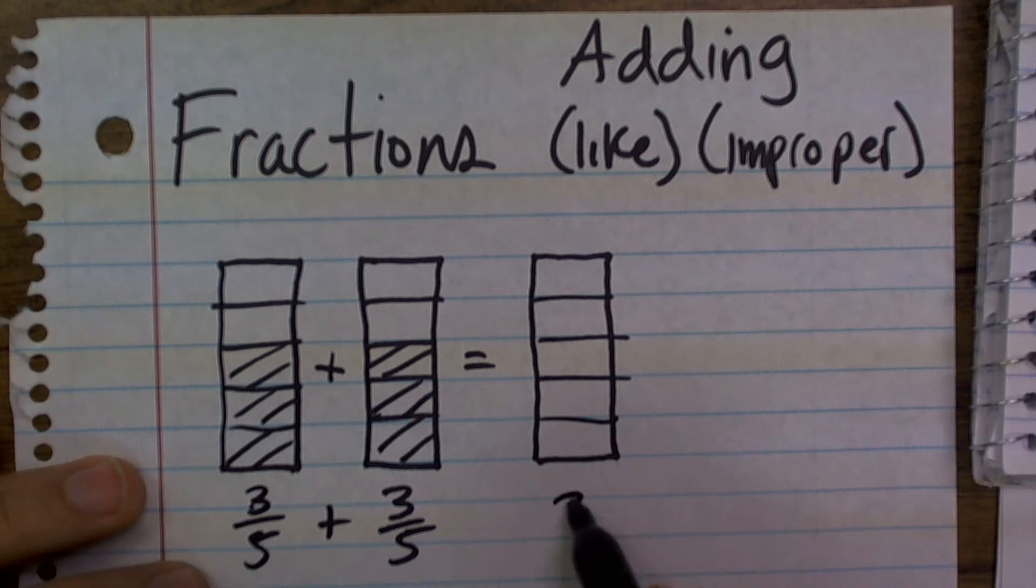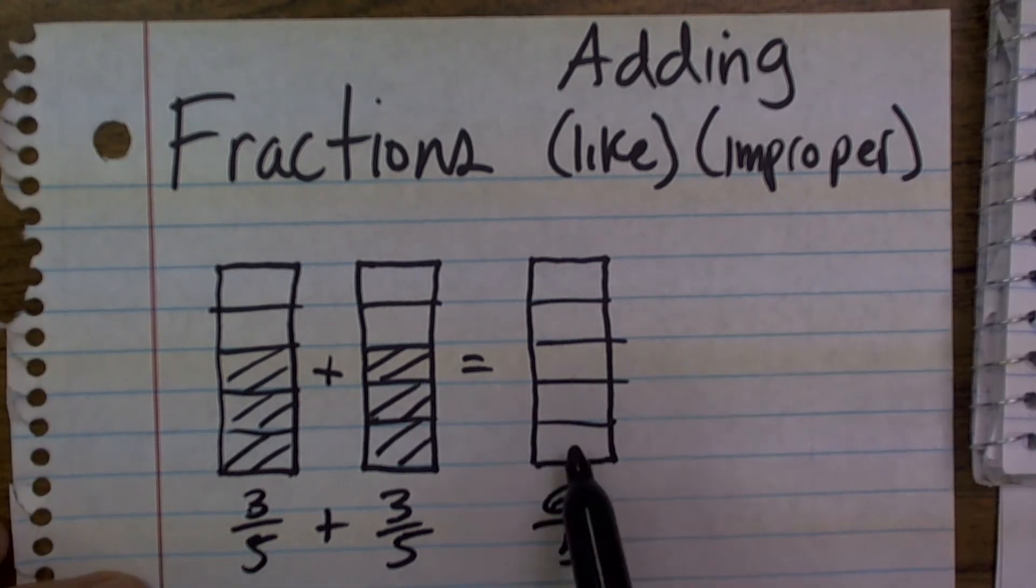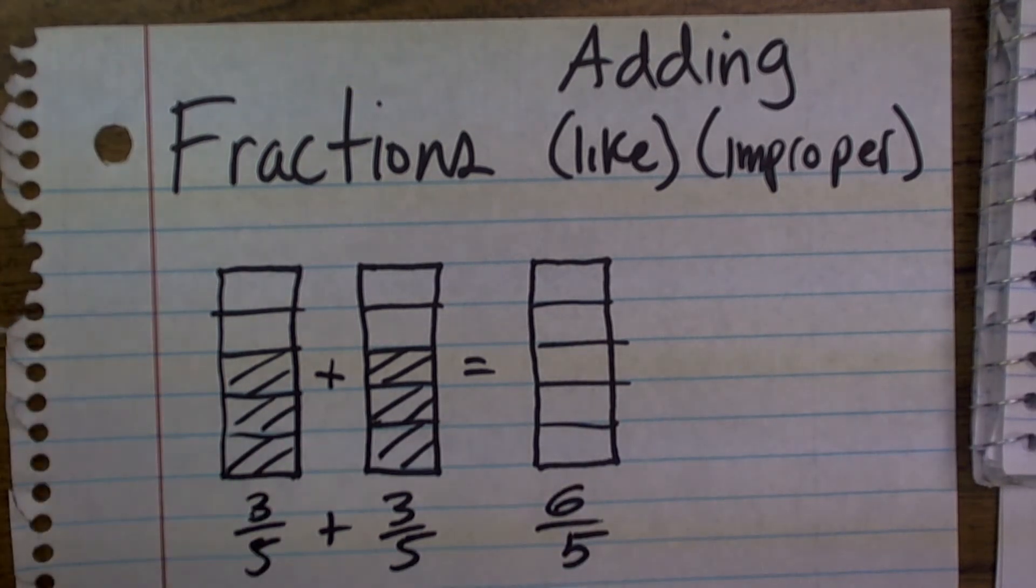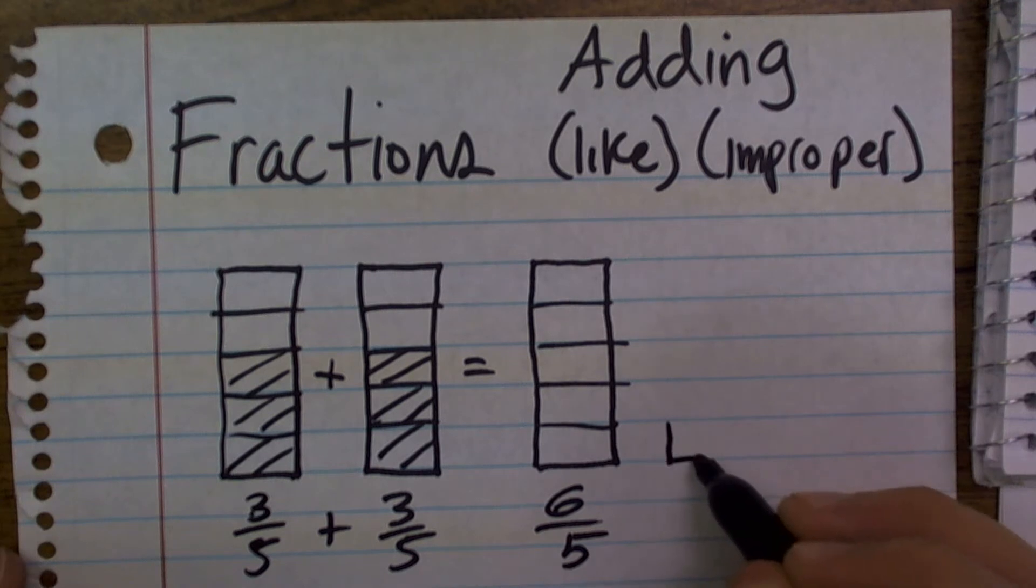But then when I add 3 plus 3, what I end up getting is 6 fifths. Well, that becomes a problem because, look, I only have five different sections, right? So what I'm going to have to do is I'm going to have to carry over an extra little part.